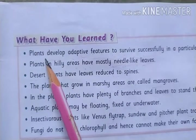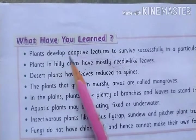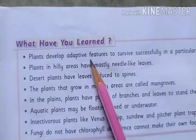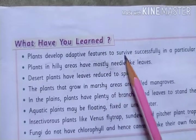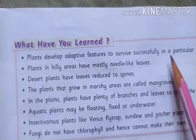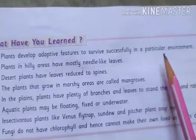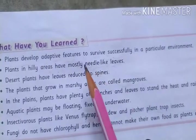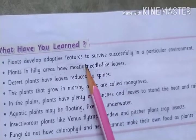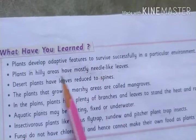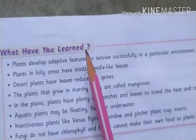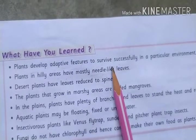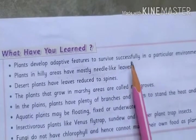What we have learned is that plants develop adaptive features — means that features are adaptive to survive successfully in a particular environment. Adaptations are special features that help them grow and survive. The particular place where they grow is called their habitat.